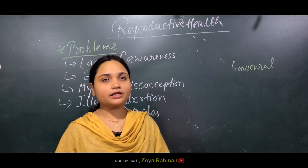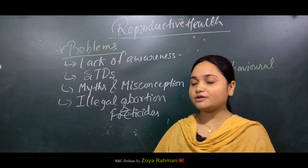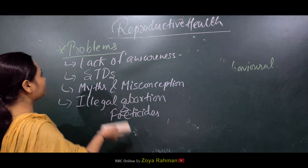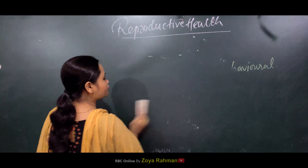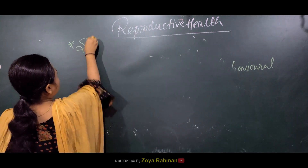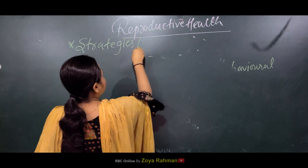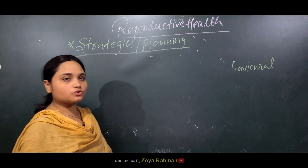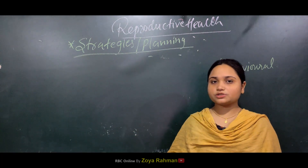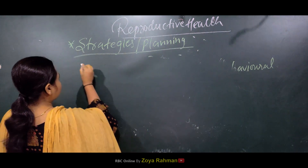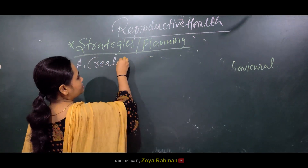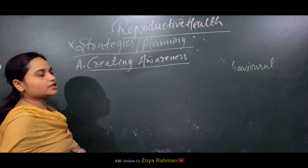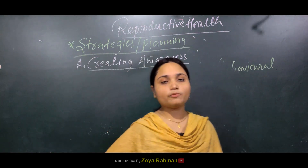After identifying all these problems, we need to learn what strategies were used to solve them. There were several strategies and plannings introduced to address problems related to reproductive health. Strategy A was creating awareness - the first strategy was to create awareness and tell people about reproductive health-related matters, including awareness about STDs.